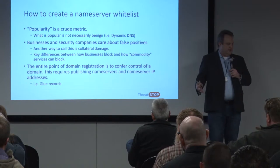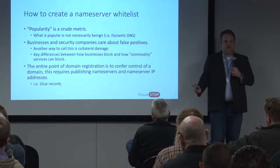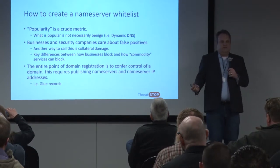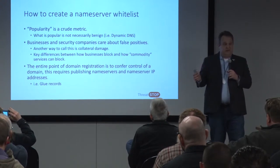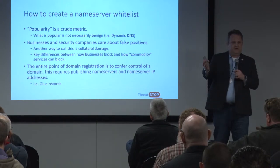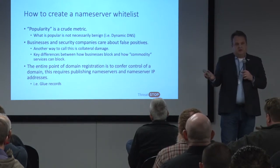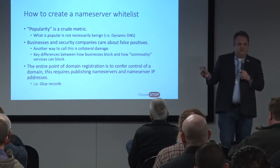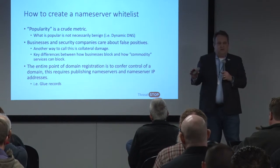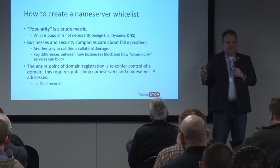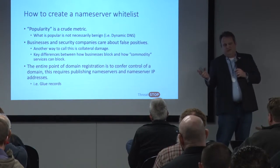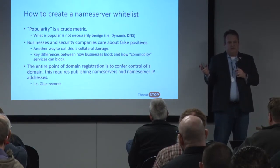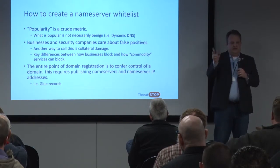So how to create a whitelist? Popularity is kind of a crude metric. Most of the DNS whitelists are based on Umbrella or Majestic, which says everybody's going to Facebook, you don't want to block Facebook. That's fair, but that's crude. We don't really have a similar metric for name servers, but you can say, of the 300-some-odd million domains out there, how many domains are registered per name server, and how many domains use specific IP addresses.